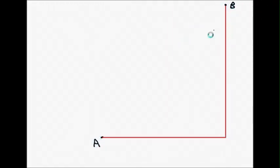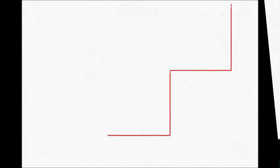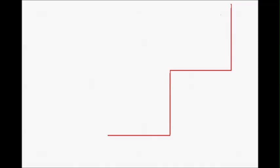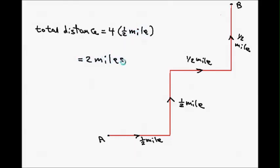Let's say I'm standing at point A and I want to get to point B. The distances are one mile to the east and then another mile to the north. If I move that path, the total distance will be two miles. Now if I decide to make more turns — moving from the same points A and B, one mile east and one mile north — I make more turns: half a mile to the east, then half to the north, then another half to the east, and then the last half mile to the north. The total distance is four times half a mile, which equals two miles again.